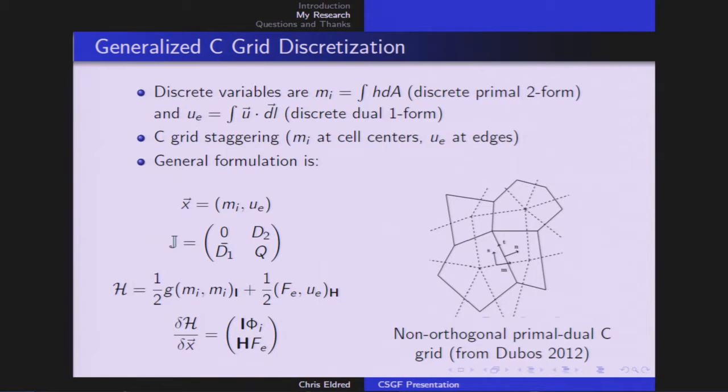Let's build a discrete model of the system. We're going to start with defining our discrete state variables. That's going to be the mass integrated over a cell, denoted by M, and then the wind integrated along a cell edge, denoted by U. For those of you who are familiar with discrete exterior calculus, we're going to represent the mass as a two-form, and we're going to represent the wind as a dual one-form. This corresponds to what's called a C-grid staggering, or just a staggered grid system, where you're predicting your mass variable at cell centers, and you're predicting your velocity variable at cell edges.